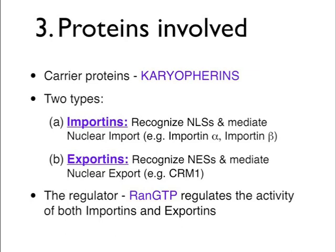The carrier proteins are known as karyopherins, and there are two types. Importins are the proteins that allow import of cargo; they recognize nuclear localization signals and mediate nuclear import, with importin alpha and importin beta as two examples. Exportins are the proteins that allow export of cargo; they recognize nuclear export signals and mediate nuclear export, with CRM1 being one well-known example.